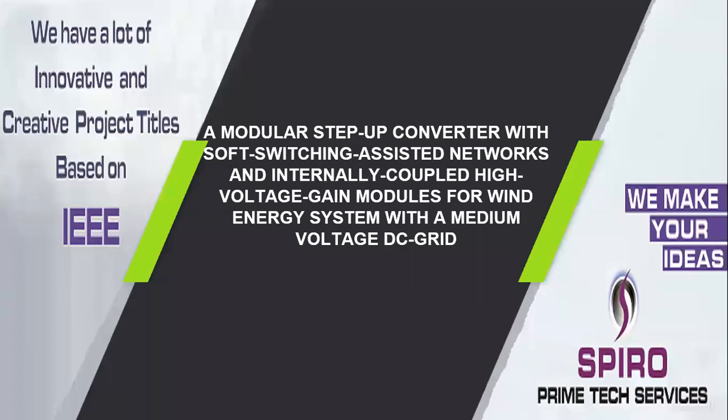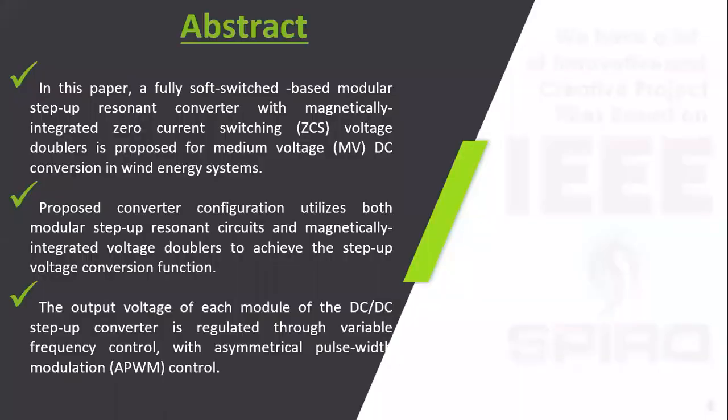Project code ITPW 11. Project title: A Modular Step-up Converter with Soft Switching Assisted Network and Internally Coupled High Voltage Gain Models for Wind Energy System with a Medium Voltage DC Grid.